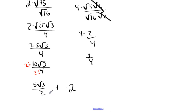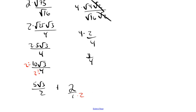We can also write this as a single fraction. The 2 technically has a denominator of 1, so to match the denominator of 2 on the left, I multiply the right side top and bottom by 2. Now both have a denominator of 2, and the expression becomes 5 radical 3 plus 4, all over 2. And that's the final answer.